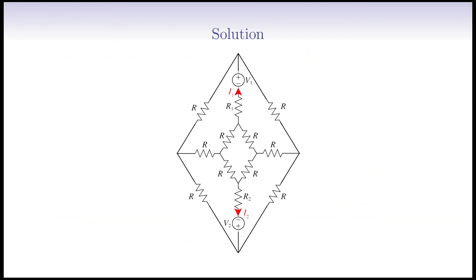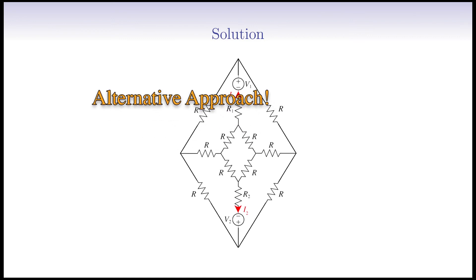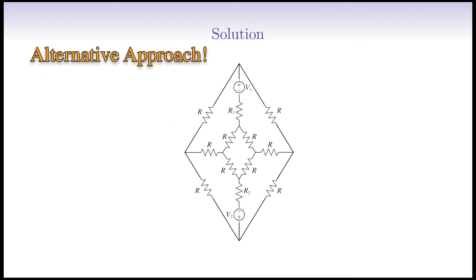We learned how to analyze this symmetric circuit and solve for the unknown currents I1 and I2. However, this is not the only way we can handle this circuit. There is actually an alternative approach that we can employ to simplify symmetric circuits and analyze them.